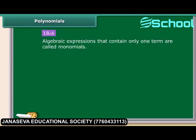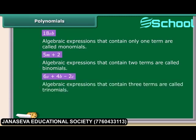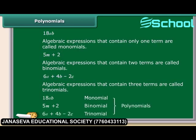Children, see this algebraic expression — it has only one term. This type of algebraic expression is called a monomial. Now, is 5M plus 2 a monomial? No, it has two terms. This type of algebraic expression is called a binomial. The expression 6A plus 4B minus 2C is not a binomial because it has three terms — this type is called a trinomial. Remember, all algebraic expressions that have one or more terms are called polynomials. Therefore, monomials, binomials and trinomials are all polynomials.